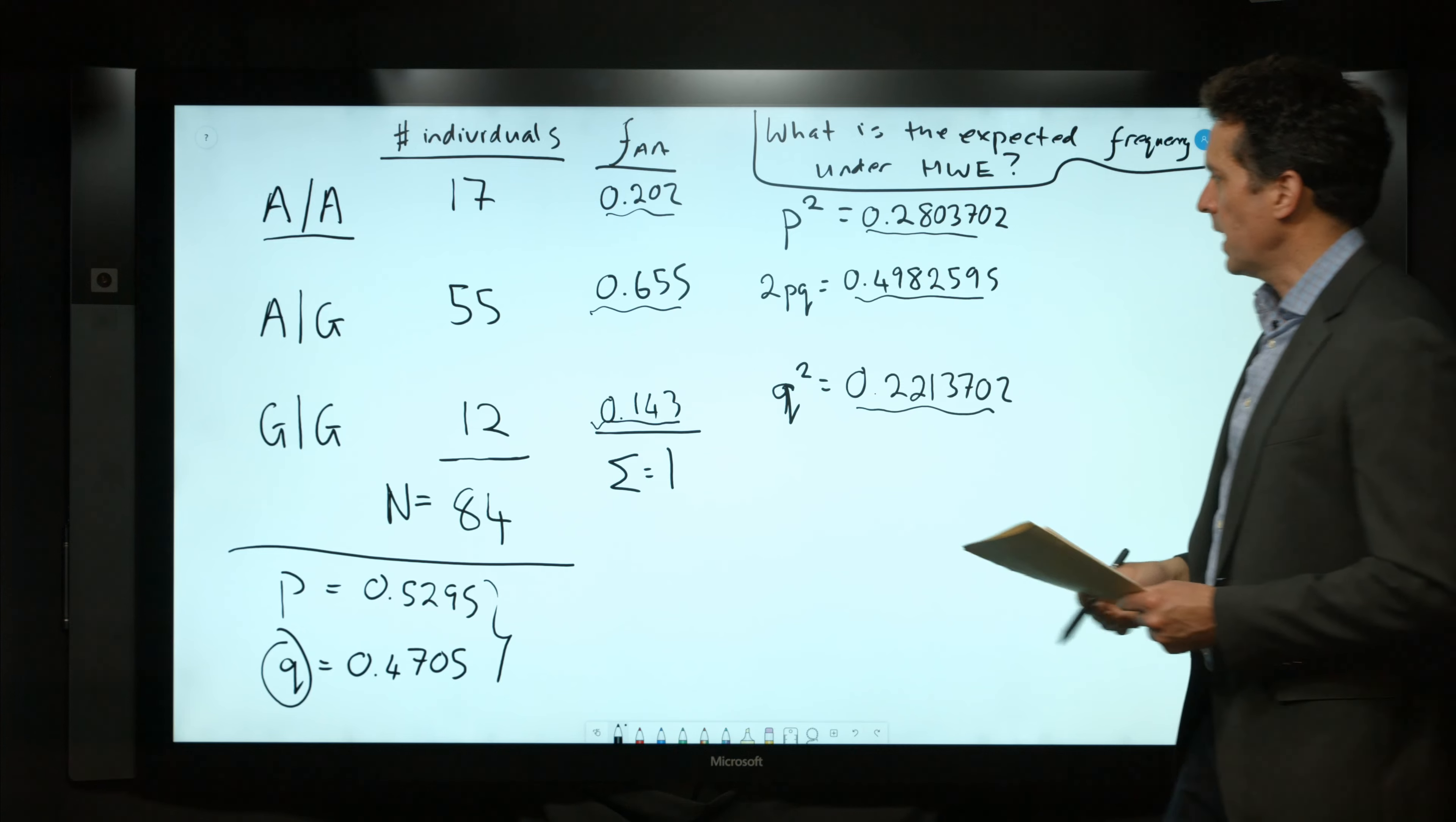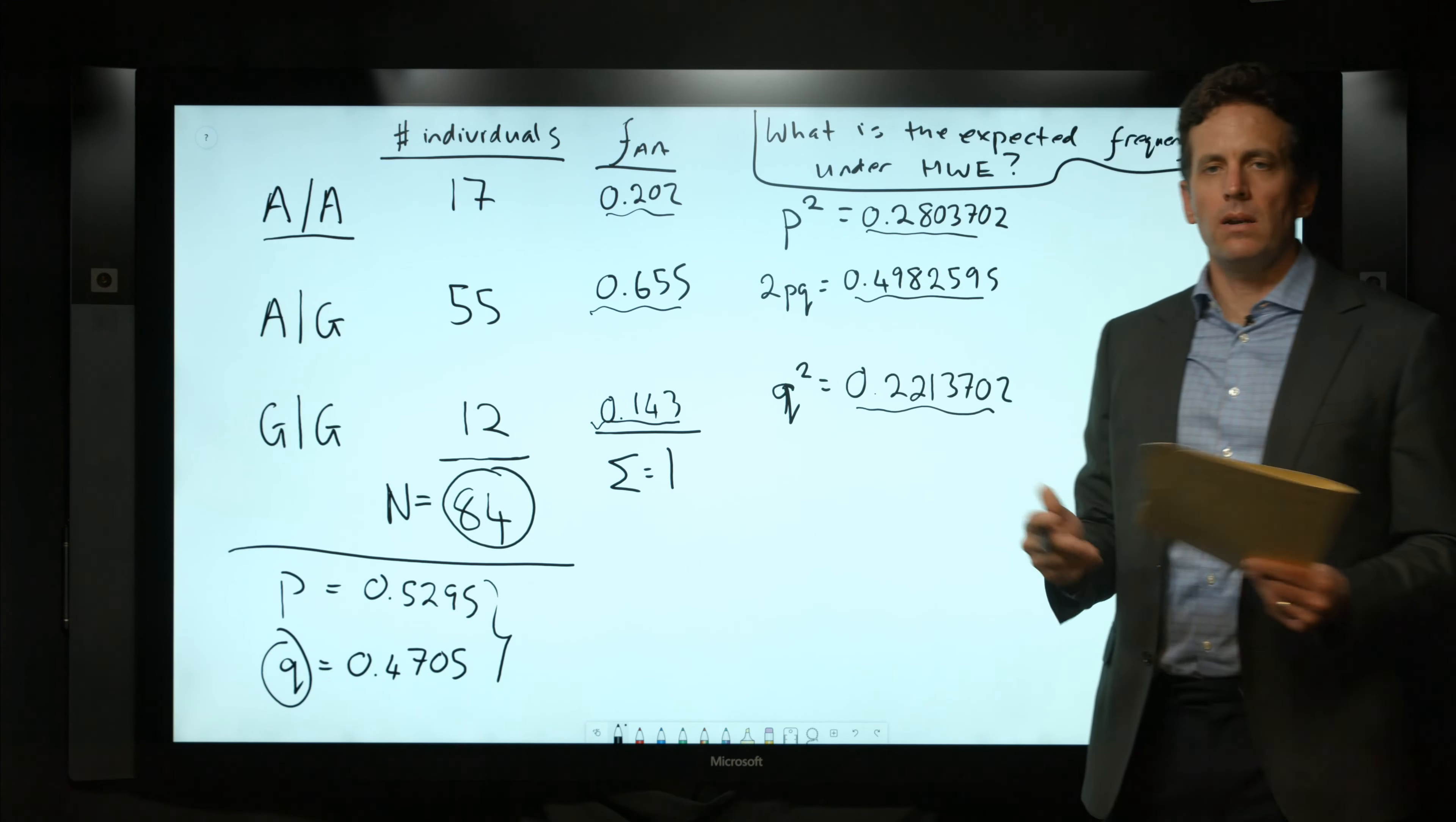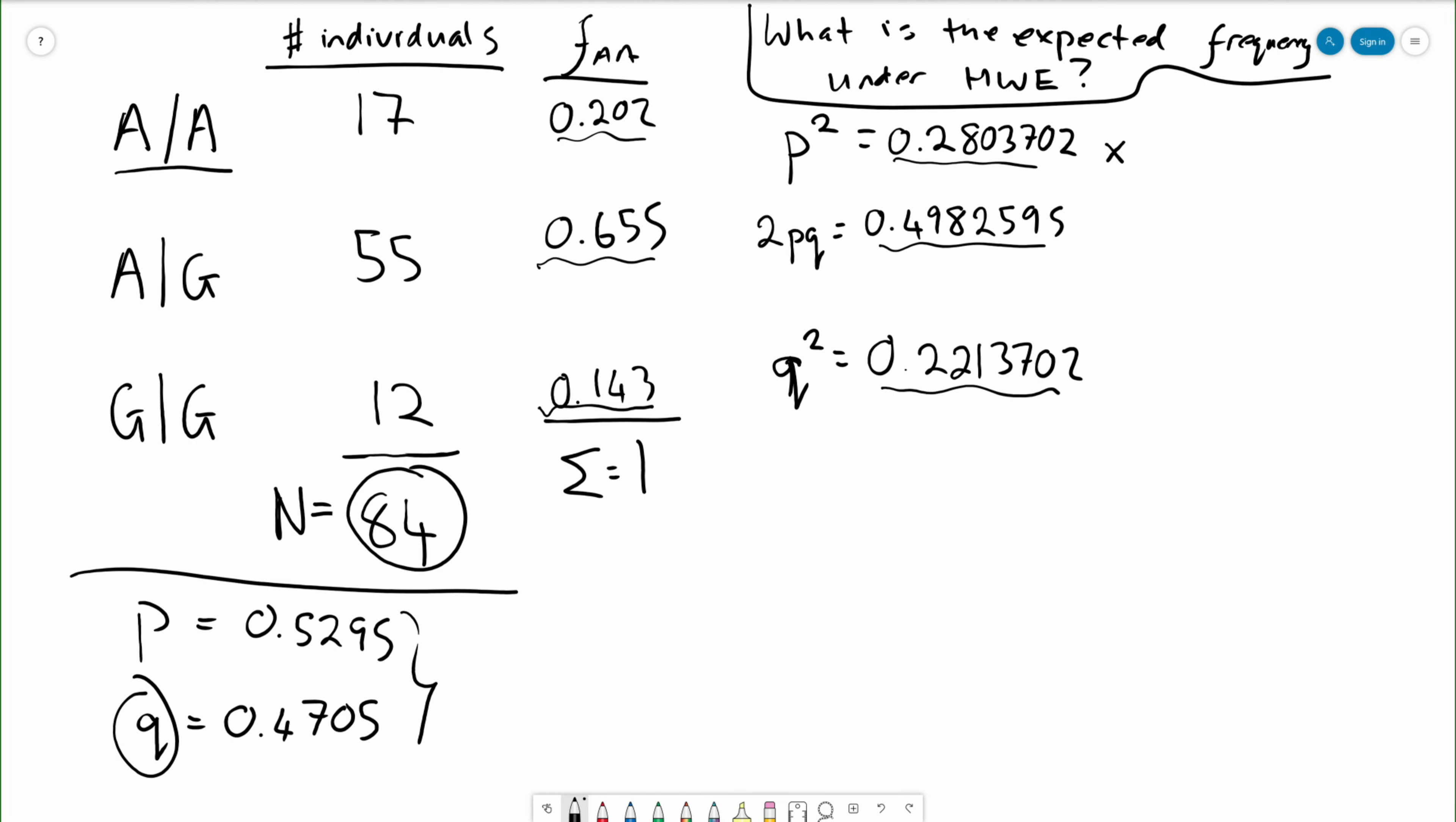Given that we have sampled a total of 84 individuals, we'll multiply this by the number of individuals, which is 84, for each of these. This equals 23.5511, this equals 41.8538 individuals, this equals 18.59510 individuals. If we sum up the total of the expected number of individuals, that of course is going to be equal to 84.